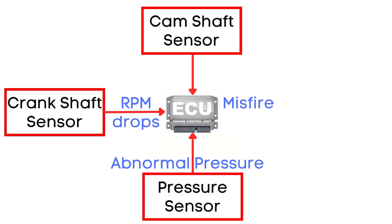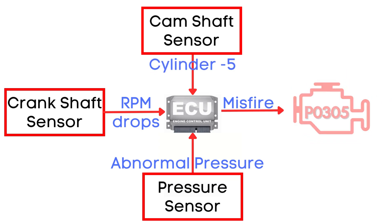The Camshaft Position Sensor helps the ECU determine which specific cylinder is experiencing the misfire. And that's how the P0305 trouble code is triggered.